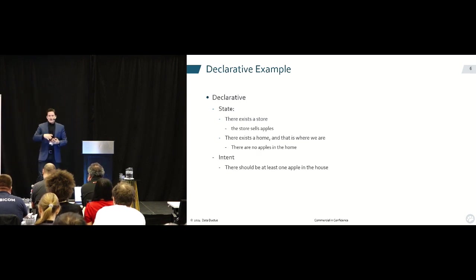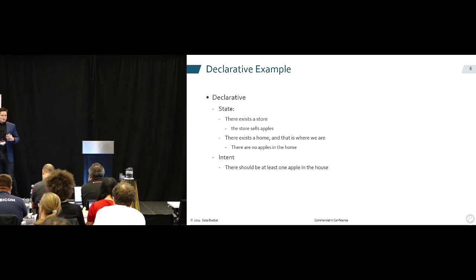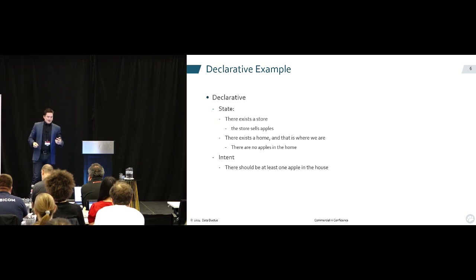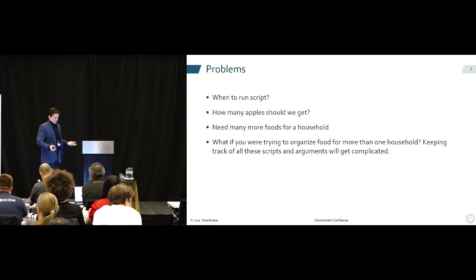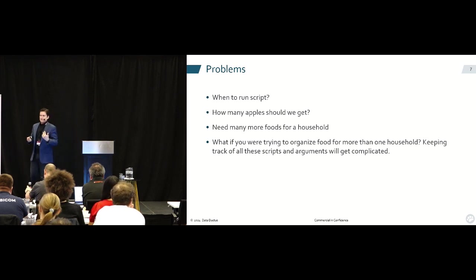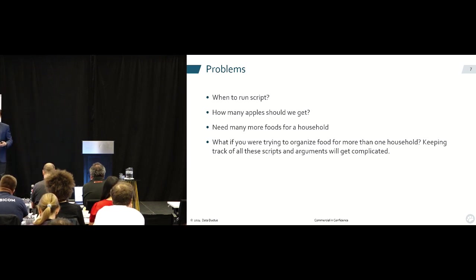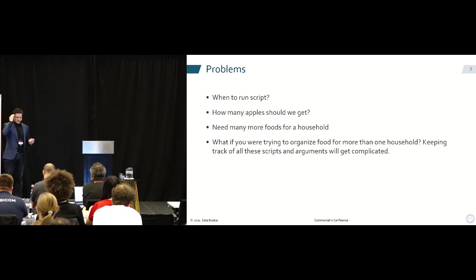Now in a declarative system, you have some state information. There's a store — maybe more than one store. The store sells apples, hopefully they have apples in stock, and there's a home with no apples in the basket. But our intent is that there should be apples in the basket. When do you run this script? How do you know if you have to? How do you know if the store is open? These are all things you have to keep in your head.